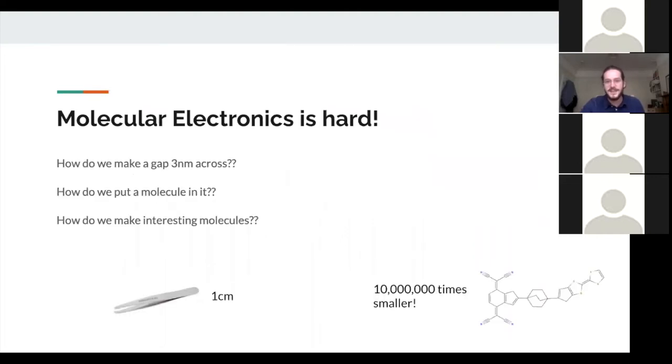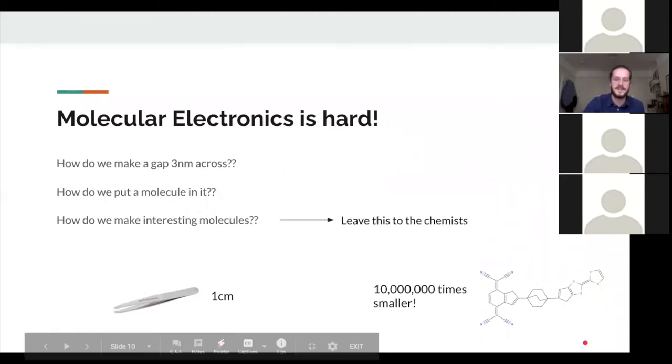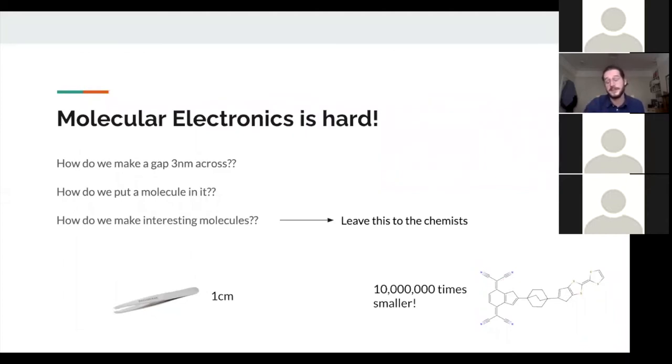So why aren't we all doing this already? This sounds fantastic. And the answer is, answer is hard. It's really hard. There's no such thing as nanometer tweezers, rather unfortunately, it would make my job an awful lot easier if there were. So how do we make a gap three nanometers across? How do we put something in it crucially? And how do we make interesting chemicals like this? This looks fairly complicated, right? So the first one, fantastic, solved, not my problem, leave it to chemists. But the first two, this is a physics engineering problem, and this is part of my job.